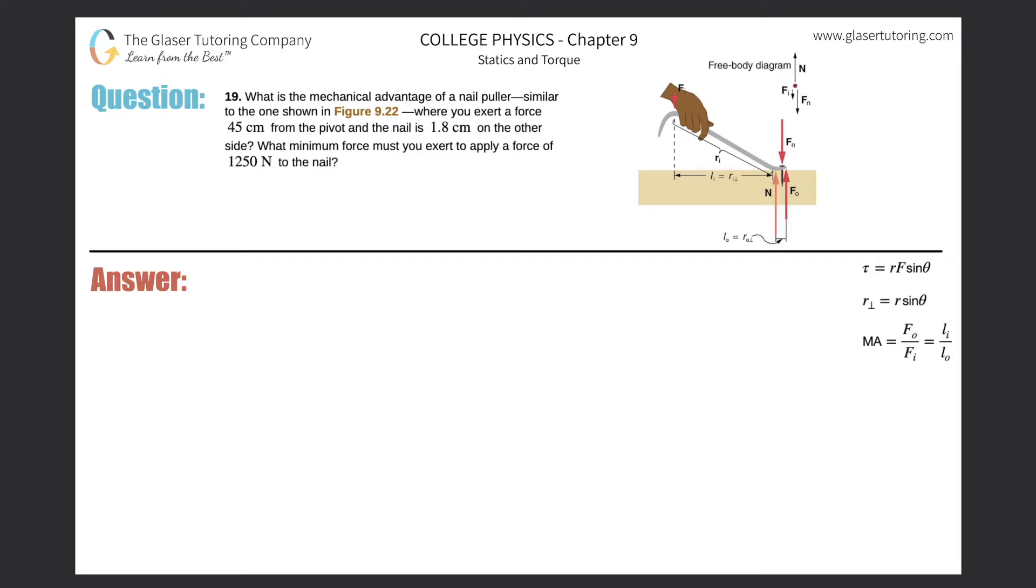Number 19: What is the mechanical advantage of a nail puller similar to the one shown in Figure 9.22, where you exert a force 45 centimeters from the pivot and the nail is 1.8 centimeters on the other side?